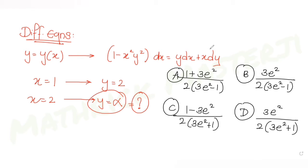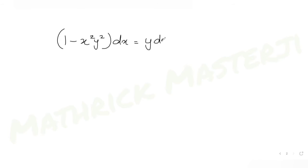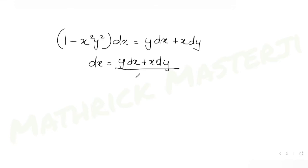Let's figure out how to solve this. Writing the differential equation: (1 - x²y²) dx = y dx + x dy. This gives dx = (y dx + x dy) / (1 - x²y²), which is the same as (y dx + x dy) / (1 - (xy)²).